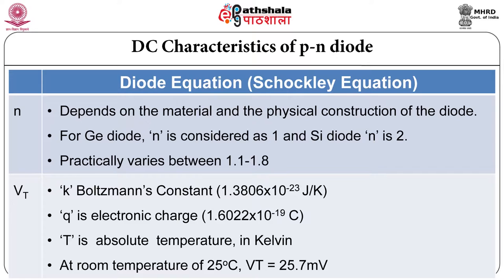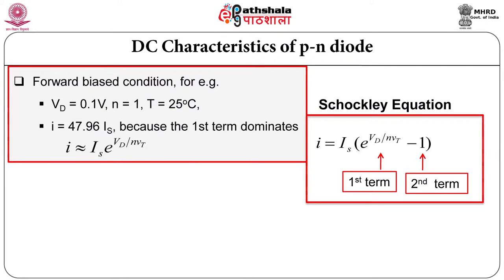If you try to verify this characteristic in the diode equation, we will take a simple condition with forward voltage 0.1 volt, n equals 1 and temperature of junction is 25 degrees centigrade. You will see that the second term of the Shockley equation will be negligible, because current is equal to almost 48 times the reverse saturation current. So we can say that I equals I_s times e raised to V_d by n*V_t.